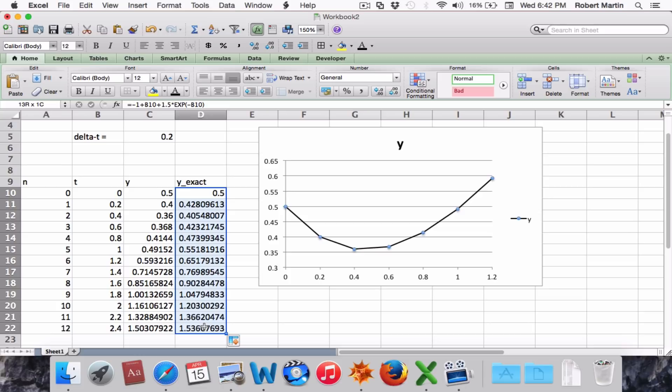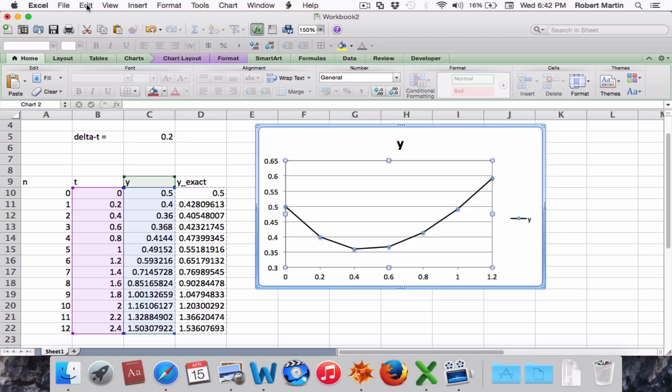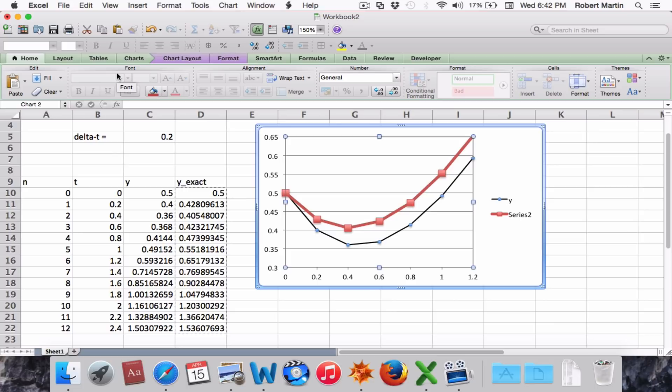To plot it, we select the values and we right-click it and say copy. Then we go up here to, with the plot selected, we go up here to edit and say paste. And there's our exact solution.